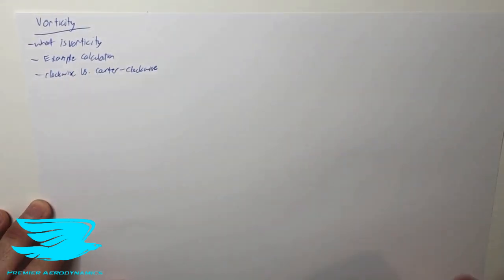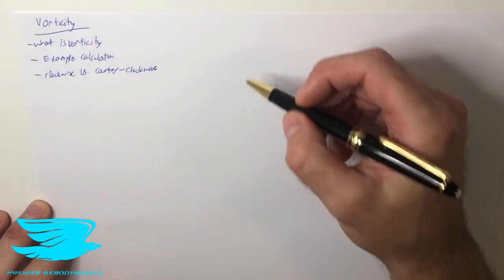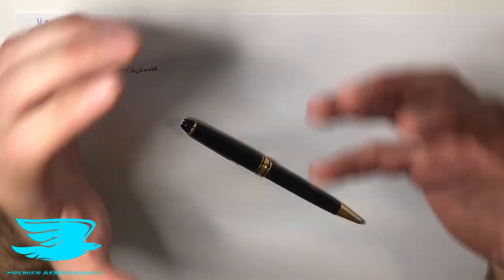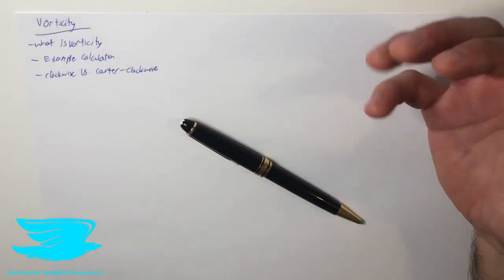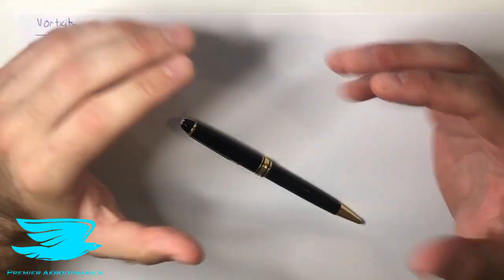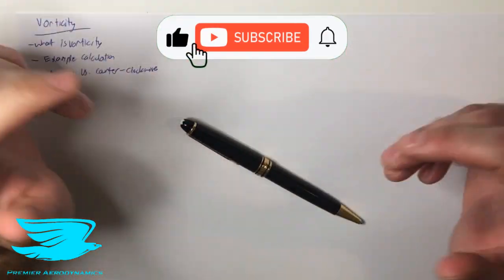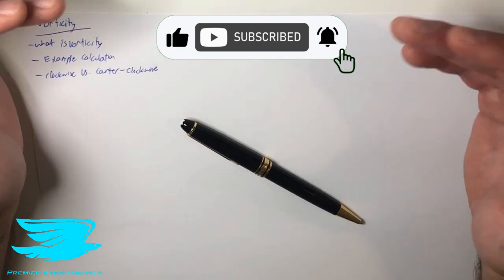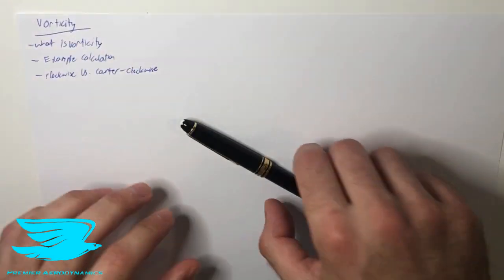This is quite an important point. So first of all, let's talk about what is vorticity. Well, vorticity determines whether a fluid is rotating or not. If the vorticity is zero, it means that the fluid is not rotating — it's irrotational. If the vorticity is not zero, it means that it is rotational, it is rotating around.